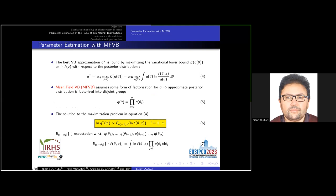The best variational Bayes approximation q is found by maximizing the variational lower bound L on log Fz with respect to the posterior distribution to obtain the solution given by equation 4. The mean field variational Bayes assumes some form of factorization for q. Indeed, thanks to the mean field theory, the approximate posterior distribution is factorized into disjoint groups as you can see in equation 5. This factorization breaks the dependency among the random variables. With this approximation, the solution to the maximization problem given by equation 4 can be written otherwise by equation 6, where the symbol E_q denotes the expectation with respect to q theta 1, q theta 2, etc. The expectation can be expressed explicitly by equation 7.